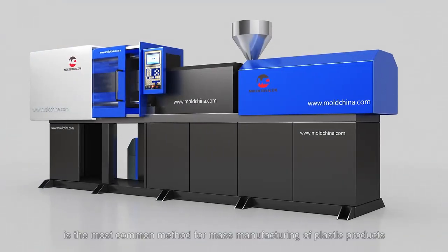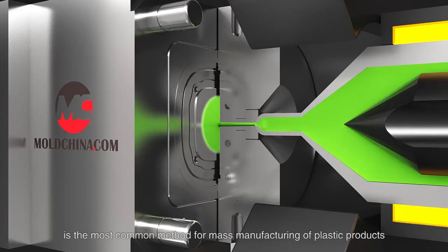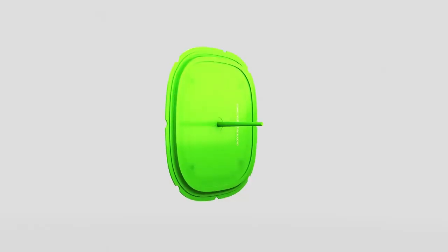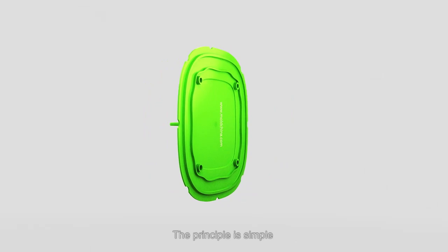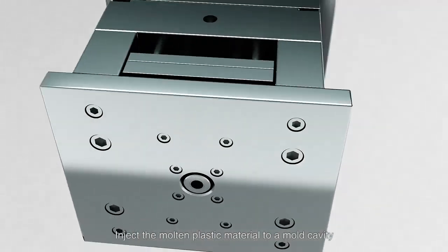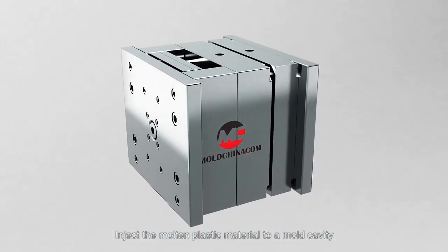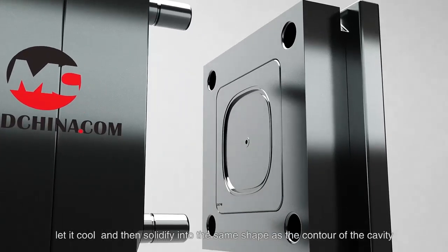Plastic injection molding is the most common method for mass manufacturing of plastic products. The principle is simple: inject the molten plastic material to a mold cavity, let it cool, and then solidify into the same shape as the contour of the cavity.